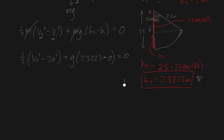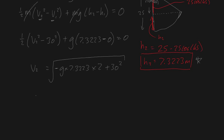Now it's a matter of arranging the algebra. v2² equals -g × 7.3223 × 2 plus 30 squared, then square root to get rid of the squared sign. Solving for v2: the square root of -9.81 × 7.3 × 2 + 30² gives us a final answer of 27.5 meters per second.